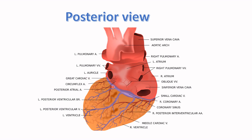Here is the right pulmonary vein, shown in blue. This artery is the circumflex artery — it turns from the anterior part and comes back into the posterior part, which is why it is called circumflex. Here we see the posterior atrial artery, then the left posterior ventricular branch. The left posterior ventricular vein is shown in blue, as veins are in blue color.